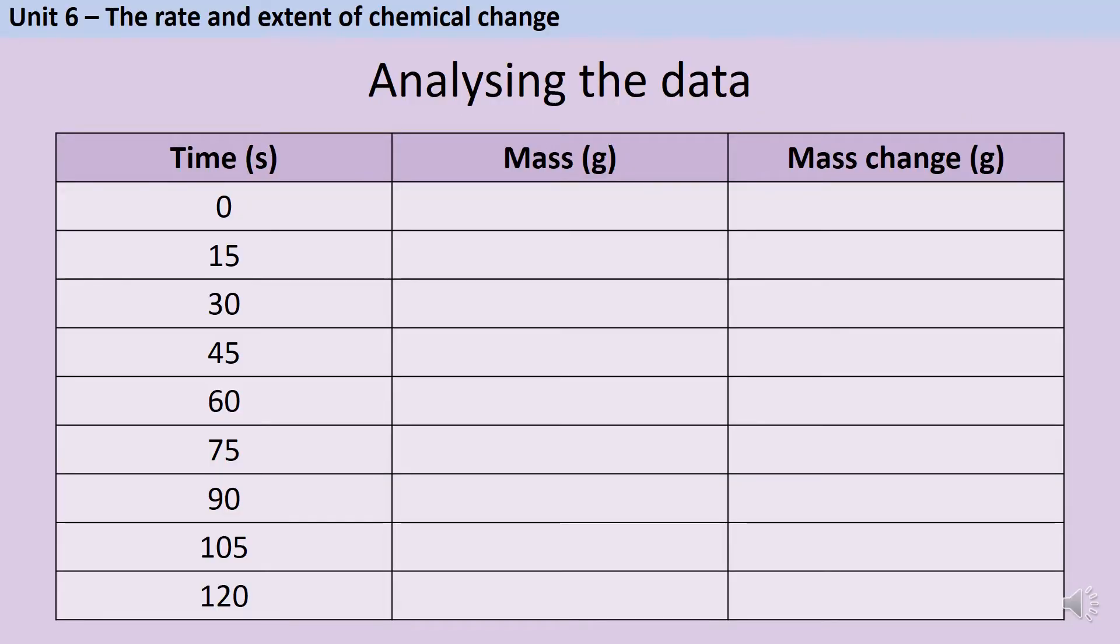When drawing the results table for my data, there are a couple of things I should do. Firstly, as with all results tables, the units for time and for mass should only be found in the header of the table. There shouldn't be any units at all in the main body where my data go. In this experiment, it's really important that I know what the change is from the initial mass, so it's important that my table includes a row for the time zero.